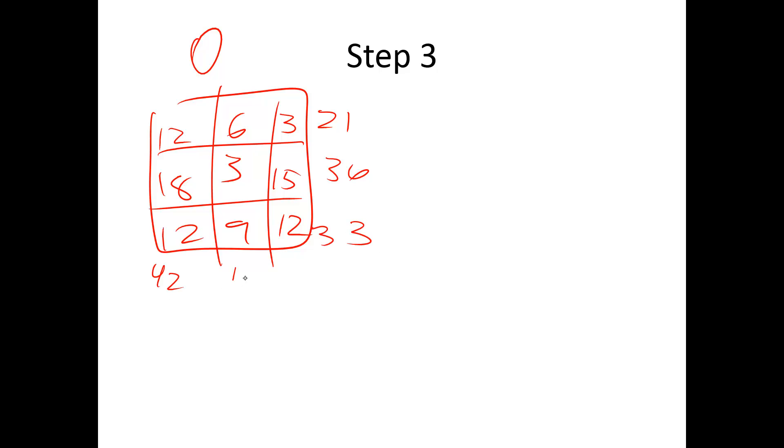So O values over here, we've got 12, 18, 12, 6, 3, 9, 3, 15, 12. So you'd create row and column totals. What happened? 21, 36, 33, and then 42, 18, and 30, that makes the grand total 90 people.